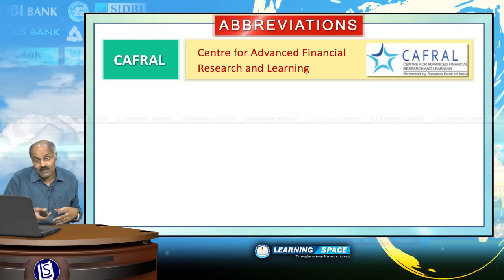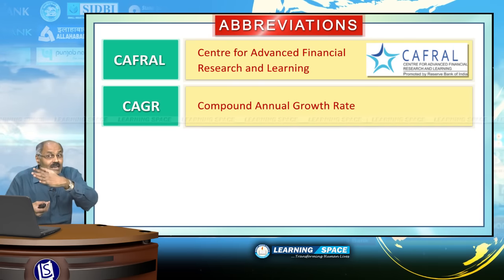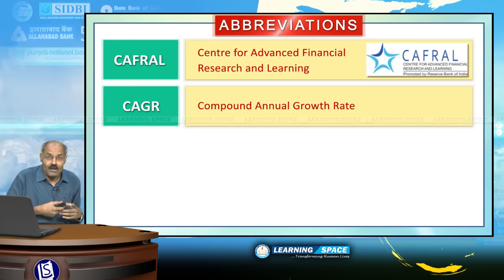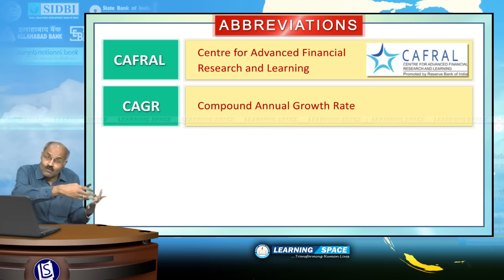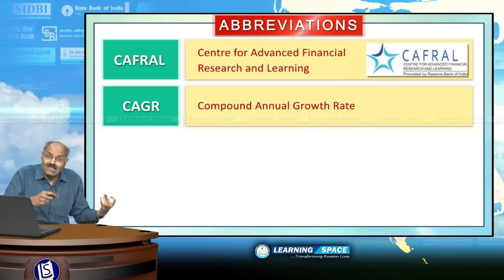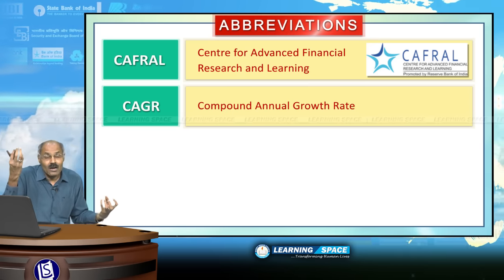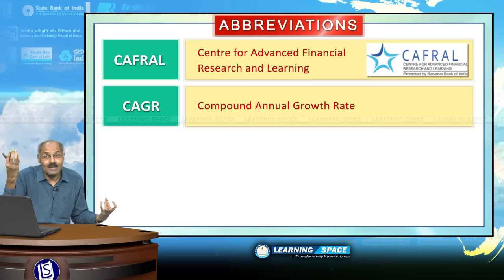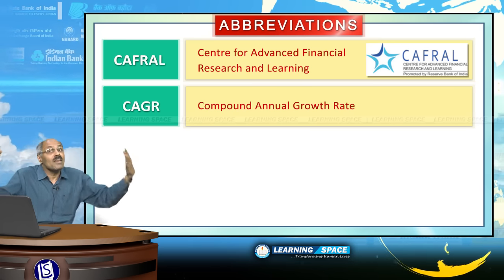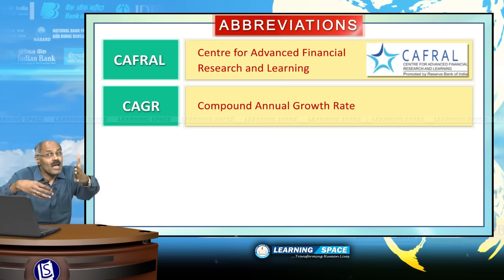CAFRAL started functioning from Mumbai. The next one is CAGR — Compound Annual Growth Rate. If a company was established three or four years ago, normally the growth rate is calculated from that instance up to till date on the basis of compound annual growth rate. All of you are well aware about compound interest — in a similar way, growth rates are also calculated.